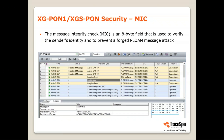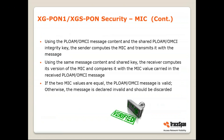The third mechanism is called MIC, or Message Integrity Check. This is an 8-byte field used to verify the sender's identity and prevent a forged PLoAM or OMCI message attack. At the end of every PLoAM message — and similarly for OMCI — there are 8 bytes which are the MIC of the sending end. Using the message content and the shared integrity key, the sender computes the MIC and transmits it with the message. The receiver computes the MIC using the same content and shared key, then compares it with the MIC value in the received message. If the two MIC values are equal, the message is valid; otherwise, it is declared invalid and discarded.